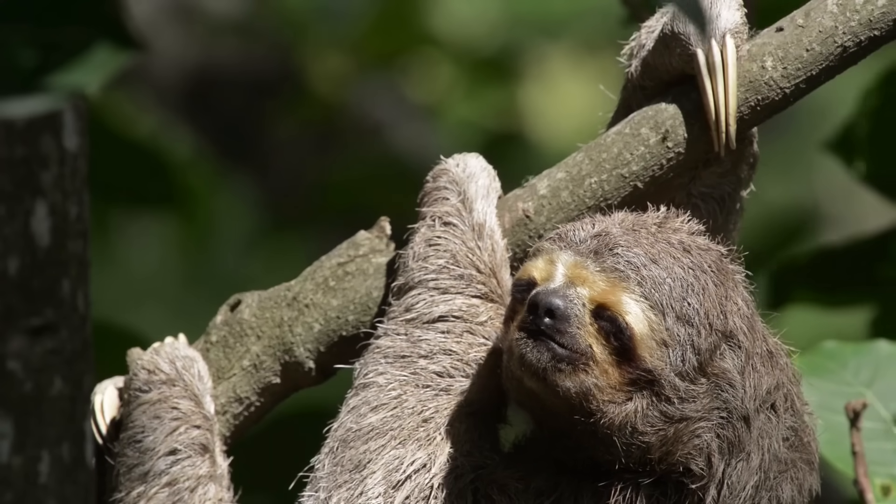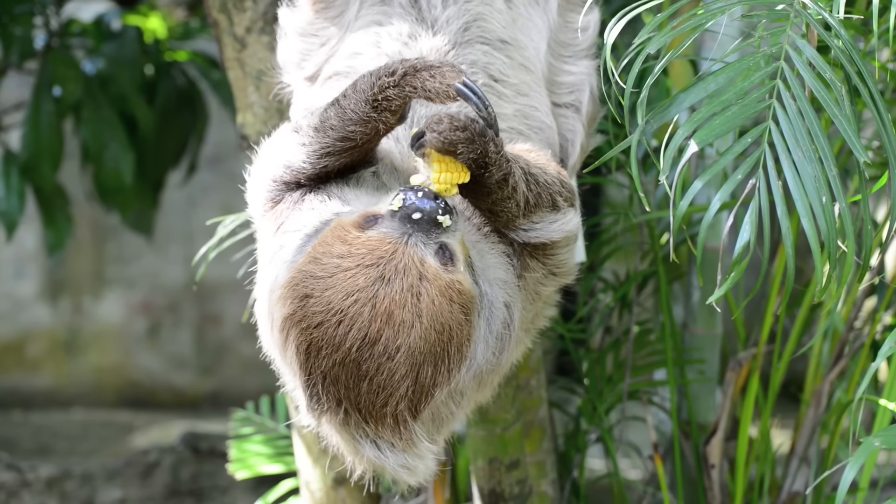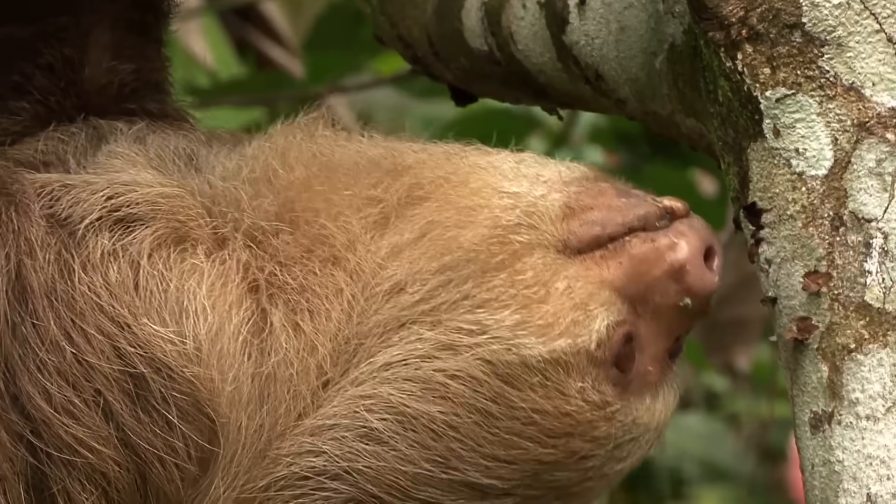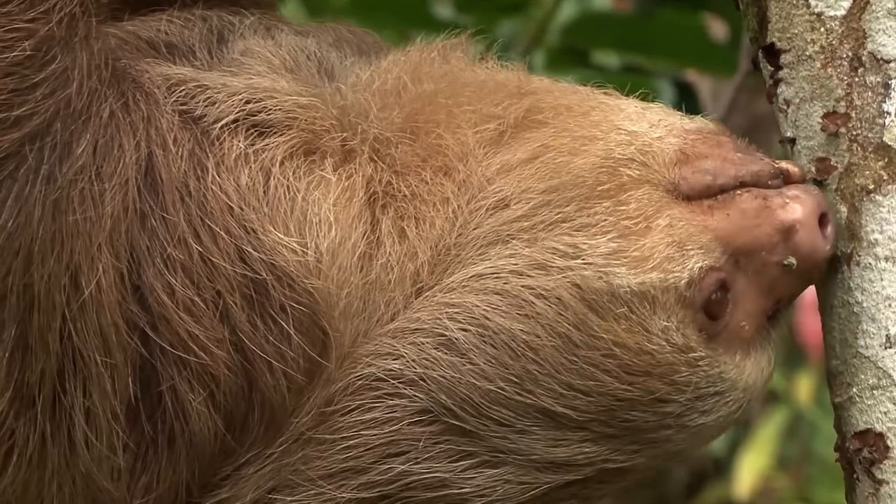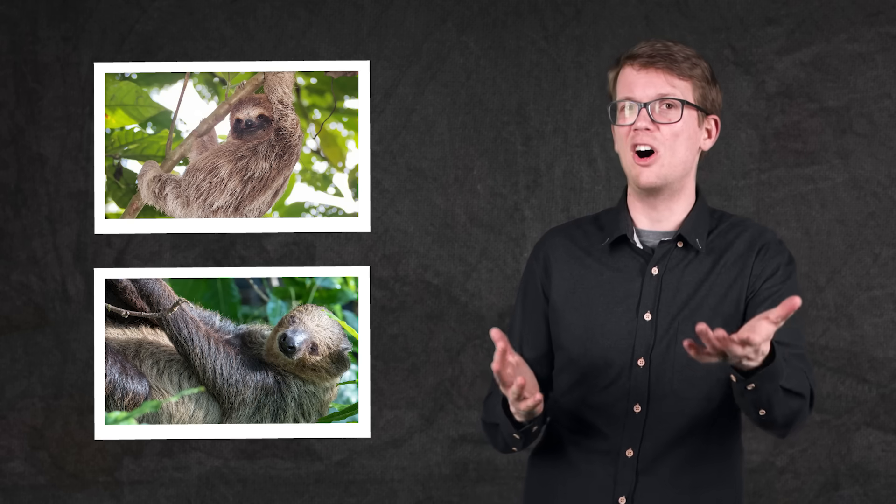Being suspensorial is basically next-level tree-dwelling, and both tree sloths are so well-adapted to it that today, they can barely walk on the ground at all. But the confusing thing is, there aren't any fossils of suspensorial sloths—at all—including those of Bradypus or Choloepus, which makes it really hard for us to understand their evolutionary story. And research into their genomes hasn't helped much either, because to make things even stranger, these two surviving tree sloths don't seem to be very closely related at all.